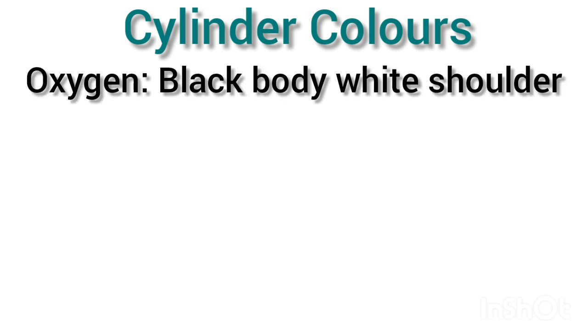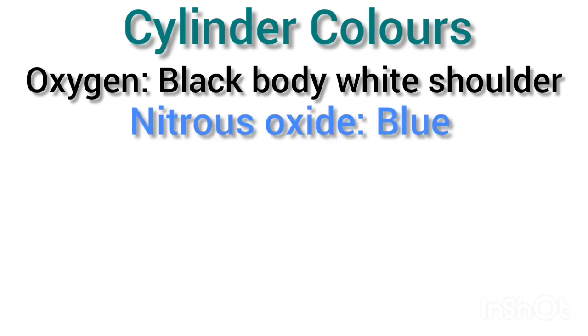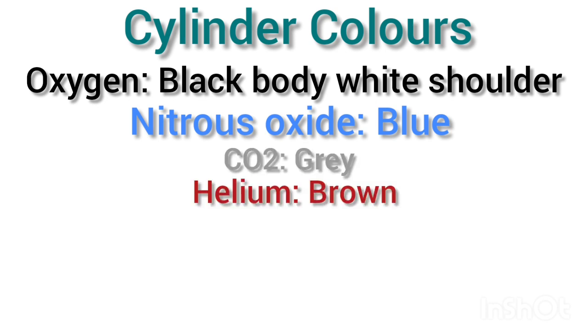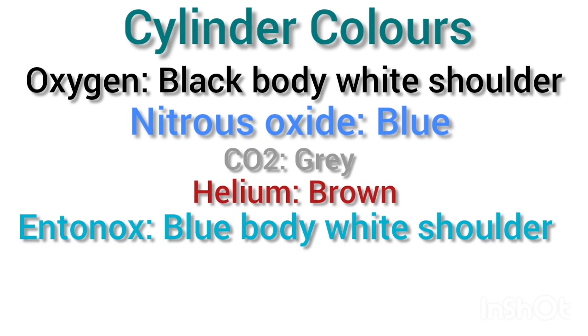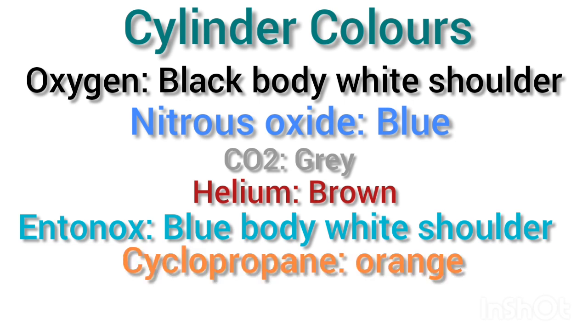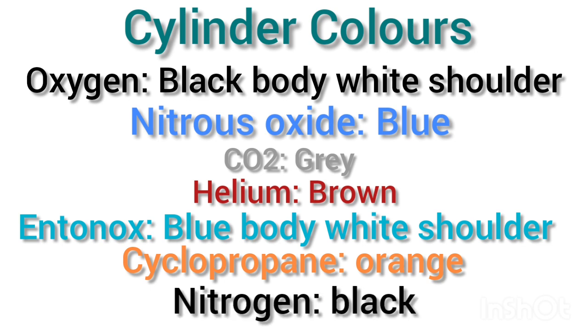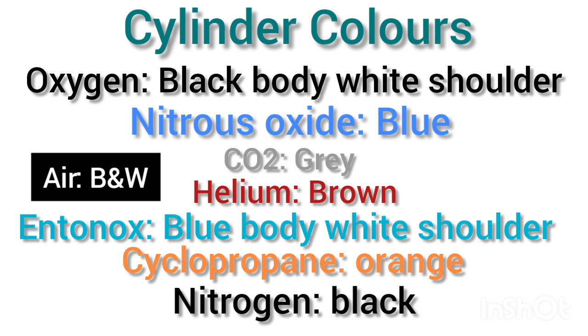Different color systems are used for different gases: black body and white shoulder for oxygen, blue for nitrous oxide, gray for carbon dioxide, brown for helium, blue body and white shoulder for Entonox (a combination of oxygen and nitrous oxide), orange for cyclopropane, black for nitrogen, and black and white for air. Suction is usually coded yellow.